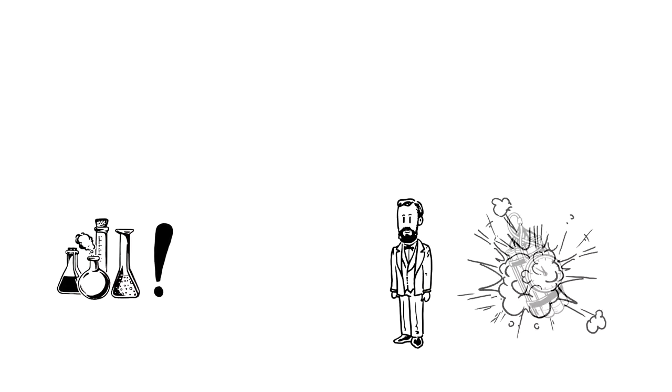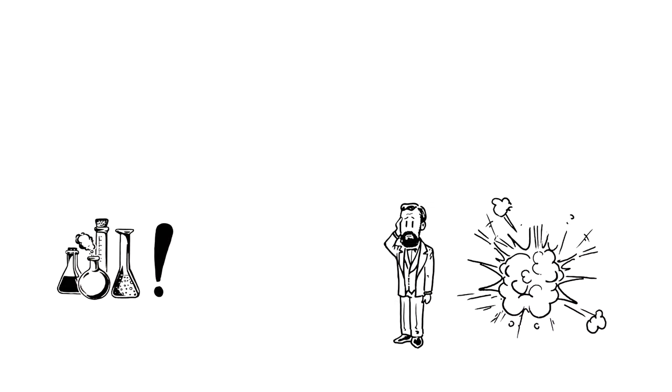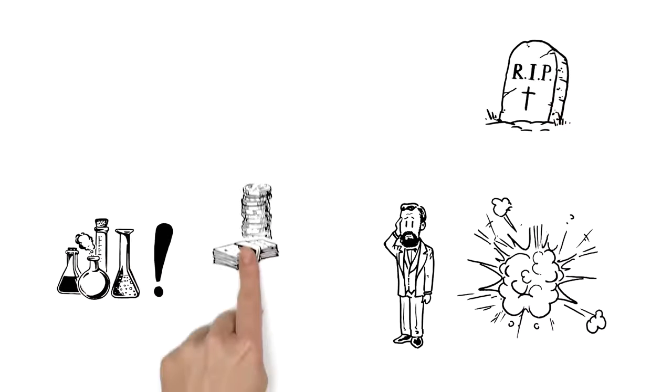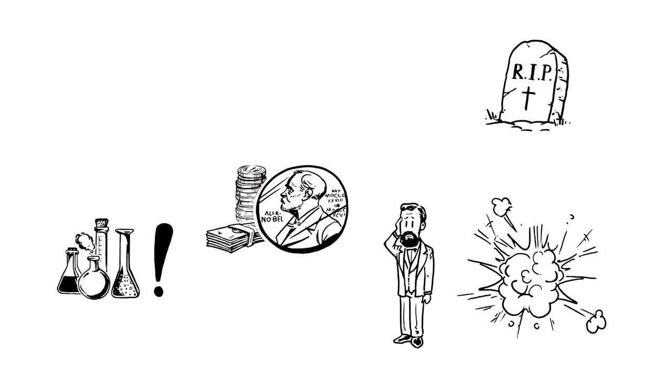However, having mostly invented explosives, he worried about how people would remember him. So when he died, he left most of his wealth in a trust to fund what would later be known as the Nobel Prizes.